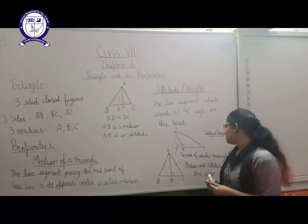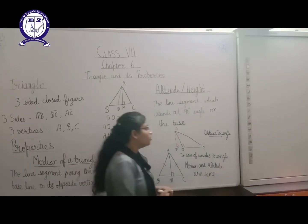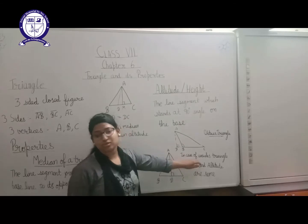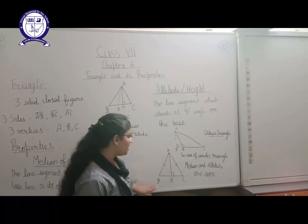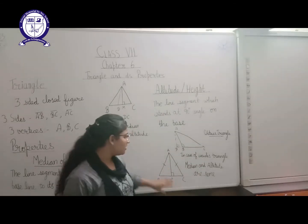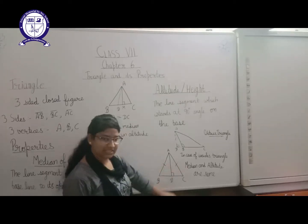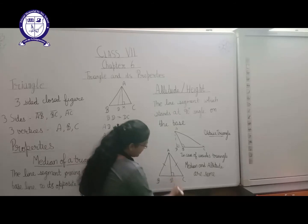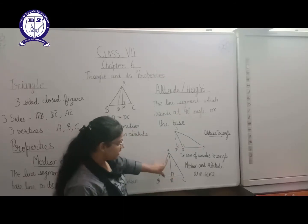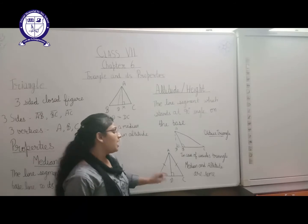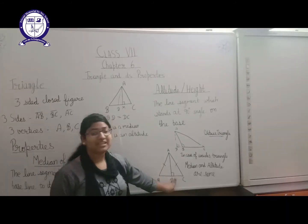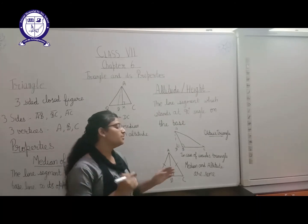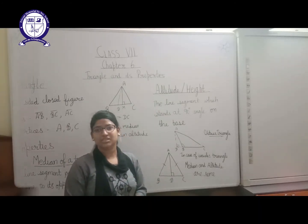Now there is a question where you have to make altitude and median in an isosceles triangle. Here ABC is an isosceles triangle where AB is equal to AC. If we take D as the midpoint and join A to D, then AD is the median here. This also stands at a 90-degree angle. So in the case of an isosceles triangle, the median and altitude are always the same.